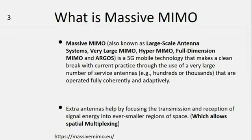What is massive MIMO? Massive MIMO, also known as large-scale antenna system, very large MIMO, or hyper MIMO, is a 5G mobile technology that makes a clean break with current practice through the use of a very large number of service antennas, for example hundreds or thousands of antennas, that are operated fully coherently and adaptively. Extra antennas help by focusing the transmission and reception of signal energy into ever smaller regions of space, which allows spatial multiplexing.